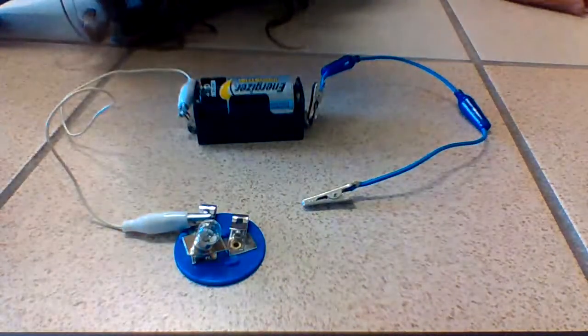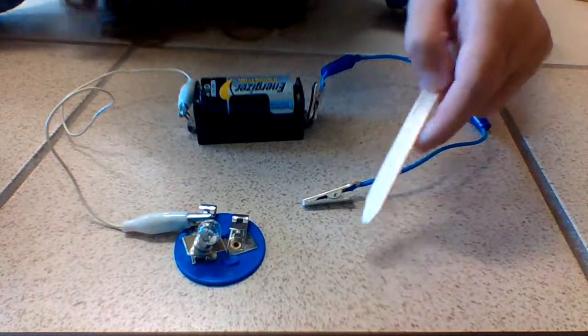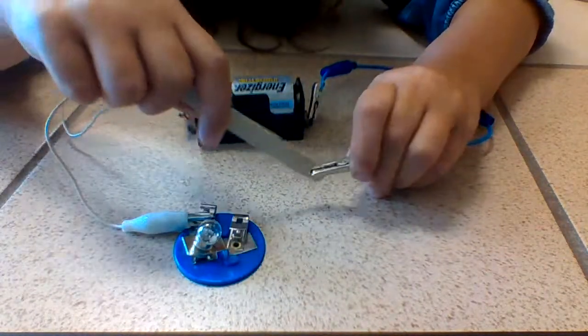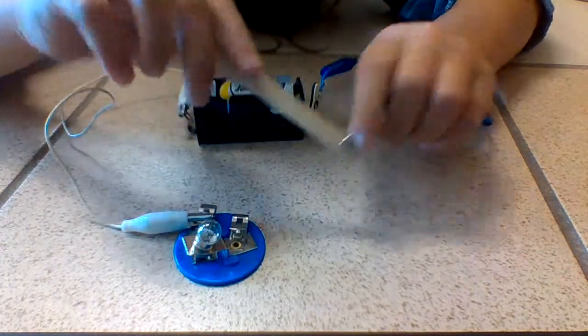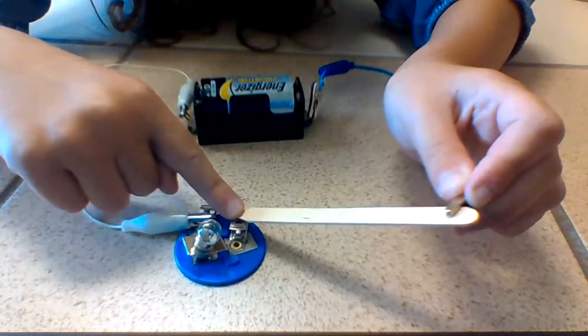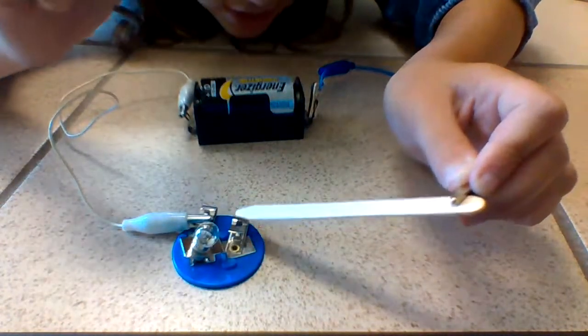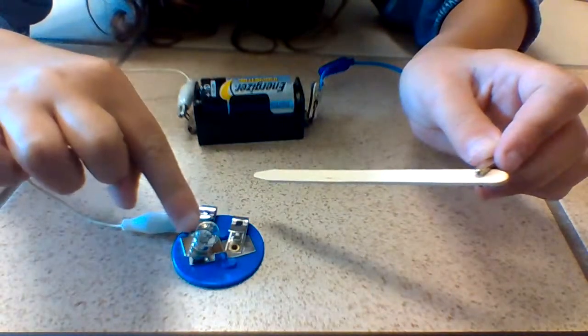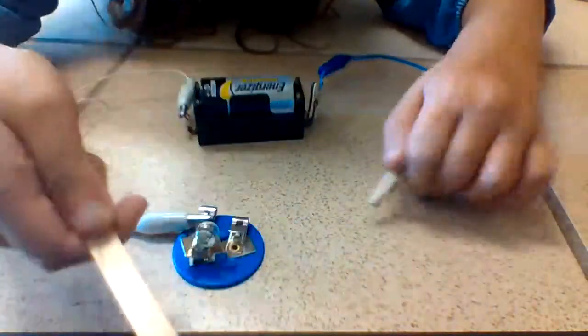So we'll test out an object, let's say maybe a wooden popsicle stick. I'm going to test it out by connecting it to there and then touching this end to the metal piece right there. And it doesn't do anything, so the bulb does not light up, so this is an insulator.